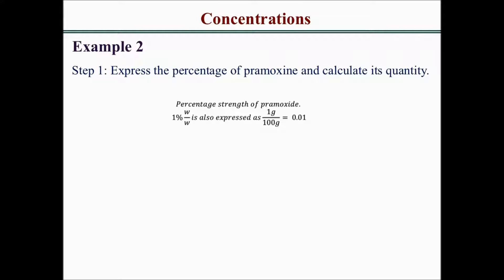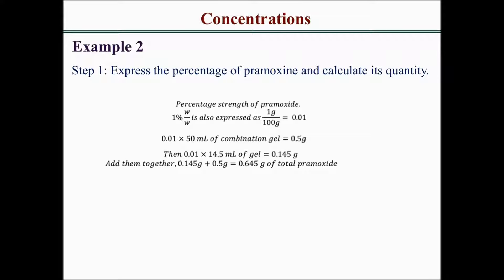The percentage strength of pramoxine is 1% w/w, expressed as 1 g per 100 g, which equals 0.01. So 0.01 times 50 mL of the combination gel gives 0.5 g of pramoxine. Then, 0.01 times 14.5 mL of the second gel gives 0.145 g of pramoxine. Adding them together: 0.145 g plus 0.5 g equals 0.645 g of total pramoxine.